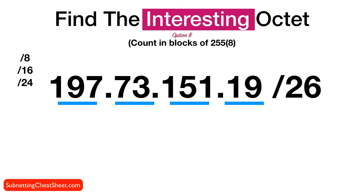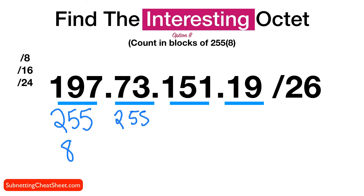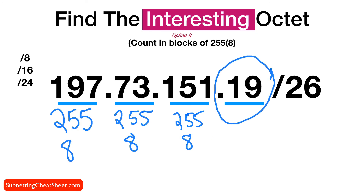The second way is to count in blocks of eight, or 255, because 255 equals eight bits. This is the way I use to figure out my interesting octet. You just write 255 — that's eight. You need to get as close to /26 as possible without going over. So 255 gives you 8, another 255 gives you 16, and another 255 gives you 24. That's as close as you're going to get, so now you know to focus all your energy on that octet.